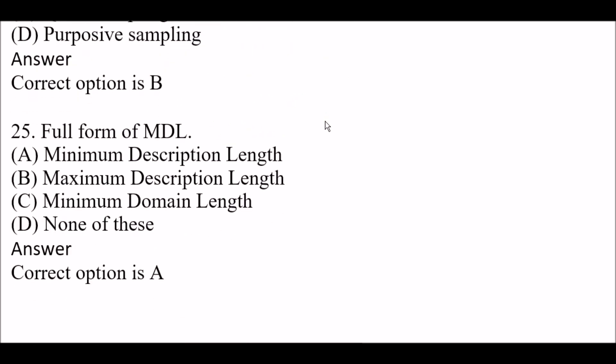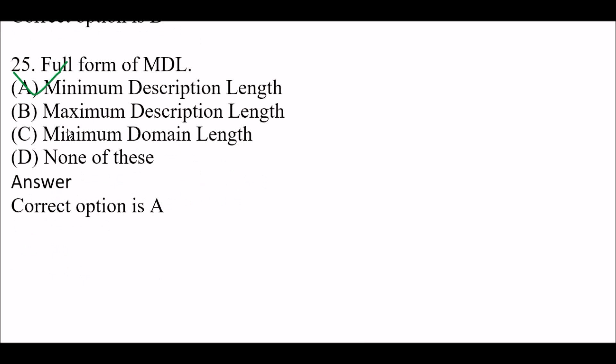Next question: Full form of MDL is — Option A: Minimum description length, Option B: Maximum description length, Option C: Minimum domain length, Option D: None of these. Right answer is Option A — minimum description length. MDL stands for minimum description length.